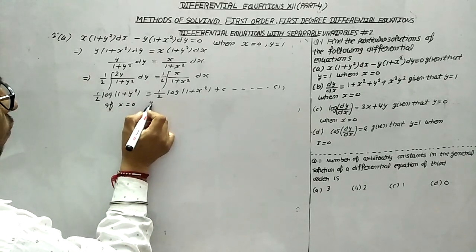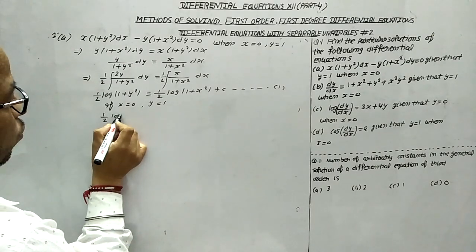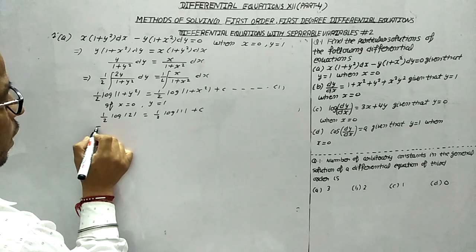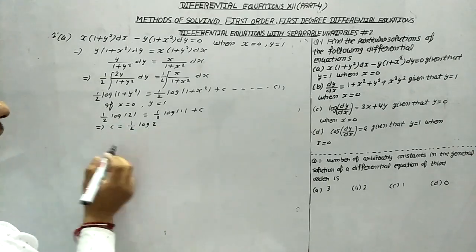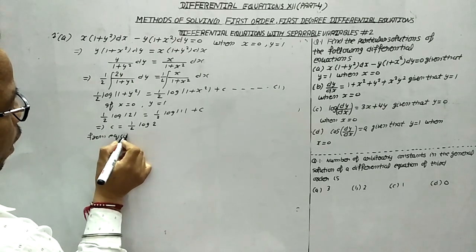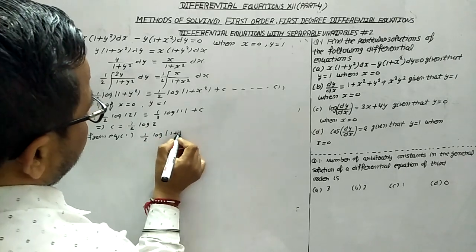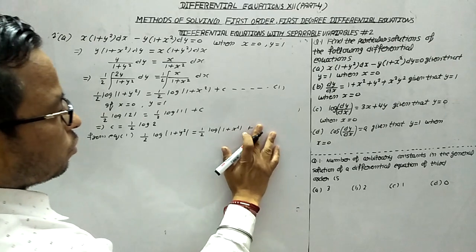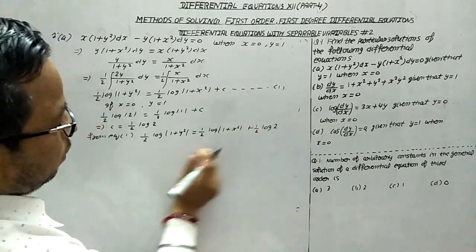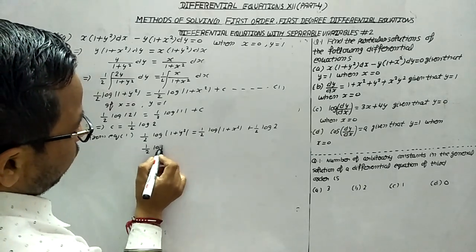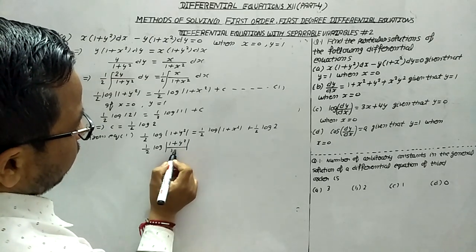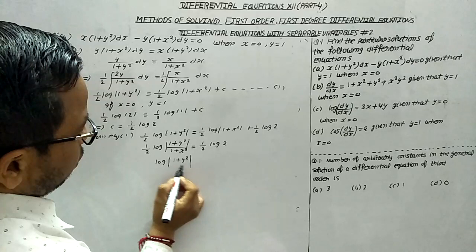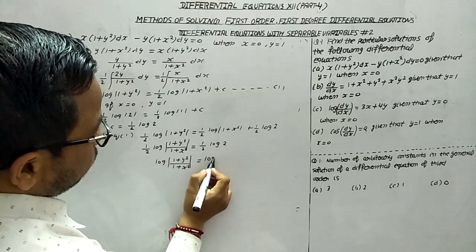Substituting x = 0, y = 1: (1/2) log 2 equals (1/2) log 1 plus c. Since log 1 = 0, we get c = (1/2) log 2. Substituting back into equation 1 and applying log m − log n = log(m/n), we get log(1 + y²)/(1 + x²) = log 2, which is the particular solution.